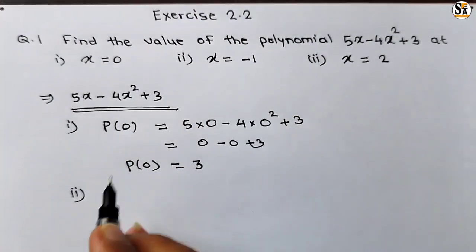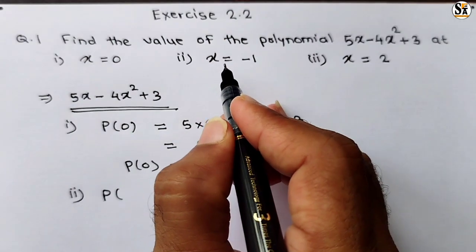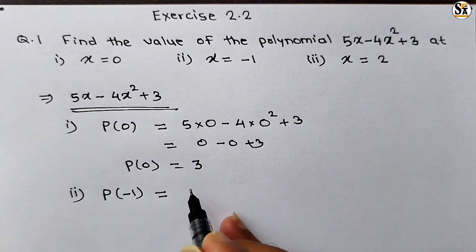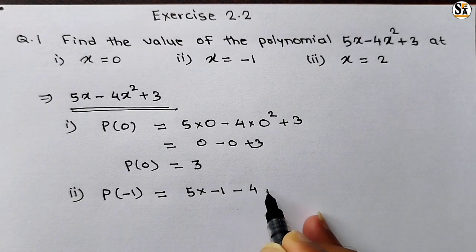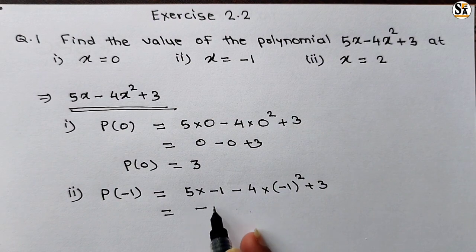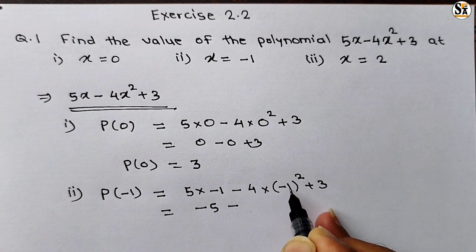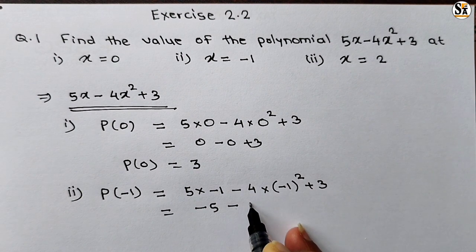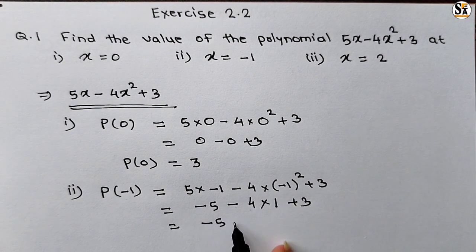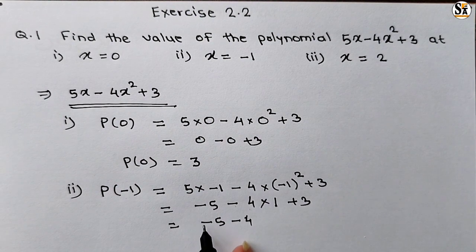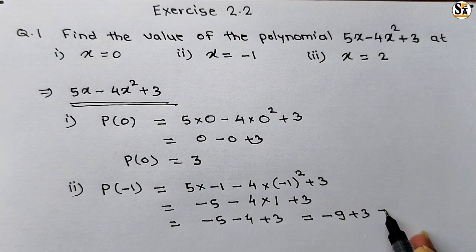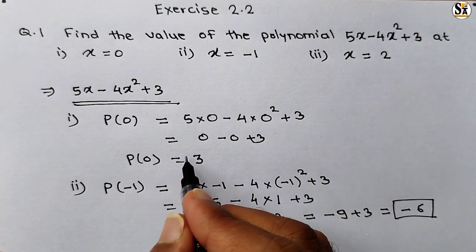Now in the second case, we have to put value of x as minus 1. So p(−1) equals 5 into (−1) minus 4 into (−1)² plus 3. Simplifying: 5 into −1 is −5, then minus 4 into 1 is −4, plus 3. So −5 minus 4 is −9, plus 3 gives minus 6. For the third case, put x equal to 2: p(2) equals 5 into 2 minus 4 into 2² plus 3. That is 10 minus 16 plus 3, which equals minus 3. So our second answer is −6 and third answer is −3.